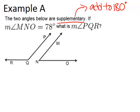In this example, it says the two angles below are supplementary. If the measure of angle MNO, that's this one right here, if that one is 78 degrees, let's mark that in. What is the measure of angle PQR? We're trying to figure out this angle over here. I'll just call it X.